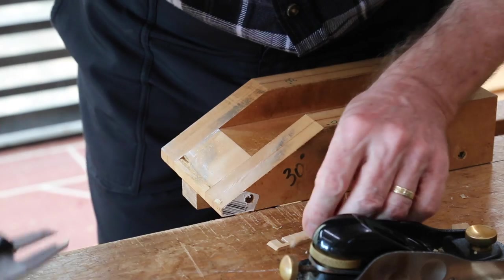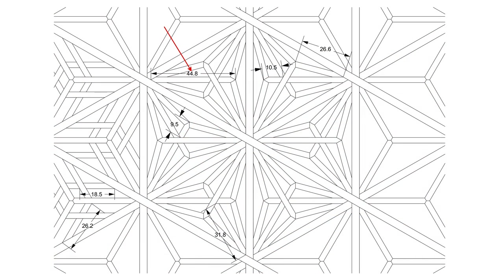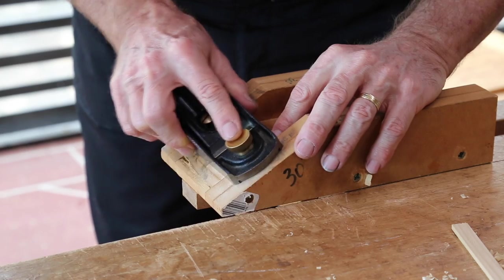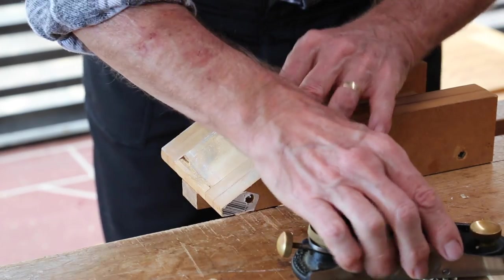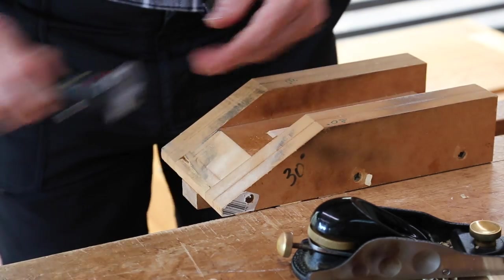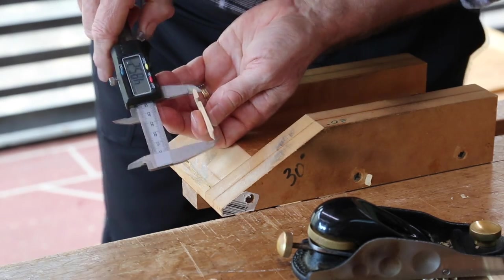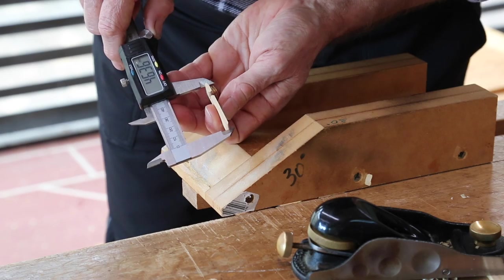Next, trim two type A and one type B kumiko to length for a trial fitting. This is 44.8mm as shown by the red arrow, but make these slightly over length by a very small amount. You can use a backstop here, but I still prefer to do this by eye, where I trim one to the exact length, then check the other two against that length.